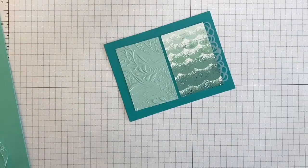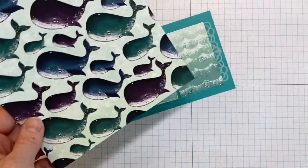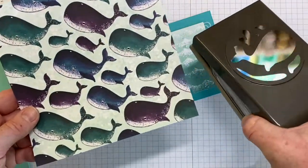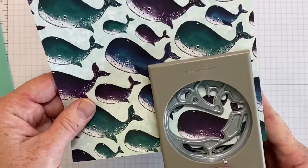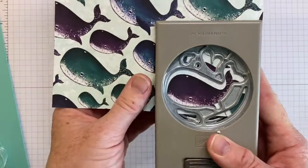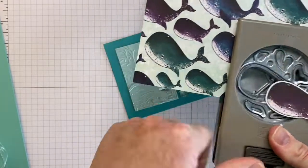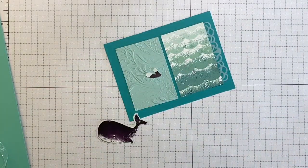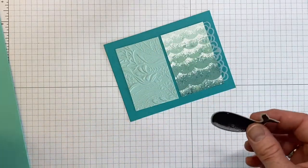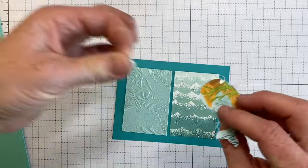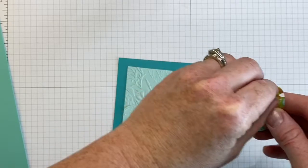We can go ahead and add that onto our card front as well. So next, I'm bringing in a piece of the designer series paper that has the coordinating image for the Build-A-Whale punch. And we're just going to go ahead and punch out one of the images. Isn't that cute? And I've also brought in some dimensionals to be able to hold that in place.